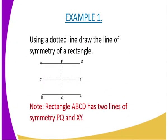On to example one, you are asked, using a dotted line, draw the line of symmetry of a rectangle. What is a line of symmetry? A line of symmetry is the line that normally divides a given shape into two equal parts, such that once the line divides the shape into two equal parts, each shape can perfectly fit over the other shape, perfectly without leaving any space.